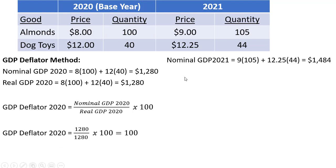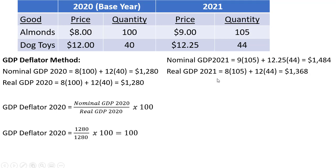Now we calculate nominal GDP in 2021 — the current dollar GDP. We take our output in 2021 and multiply by current prices: 9 times 105 plus 12.25 times 44, giving nominal GDP in 2021 of $1,484. For real GDP in 2021, we take the base year prices and multiply by 2021 quantities: 8 times 105 plus 12 times 44 — valuing 2021 output at base year prices — giving real GDP of $1,368.